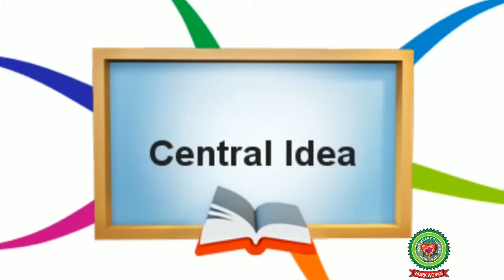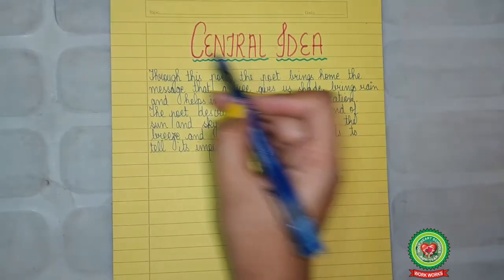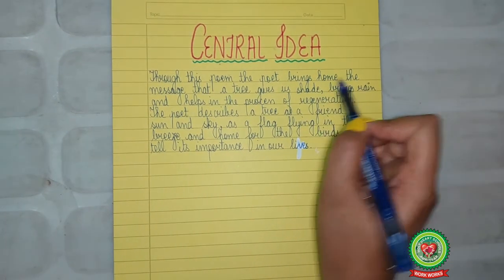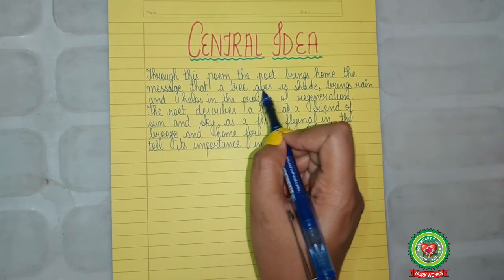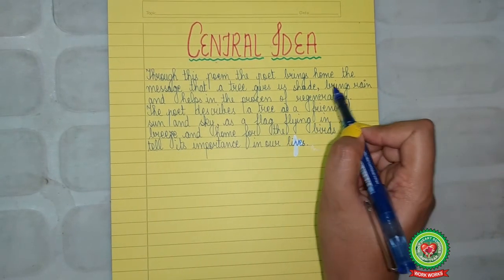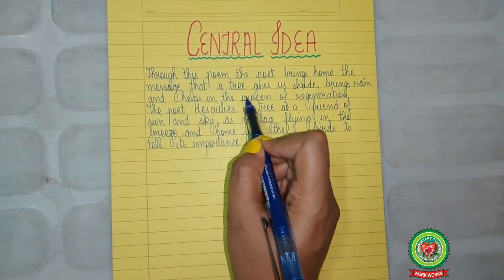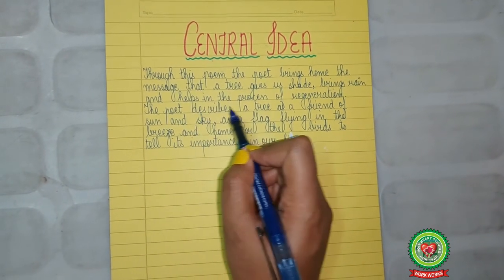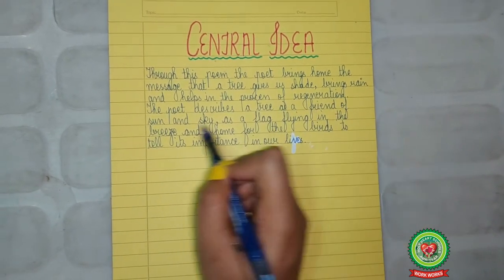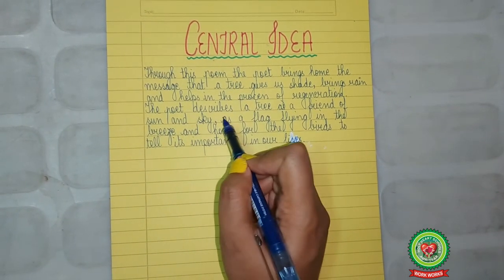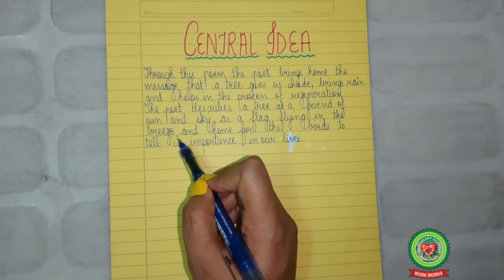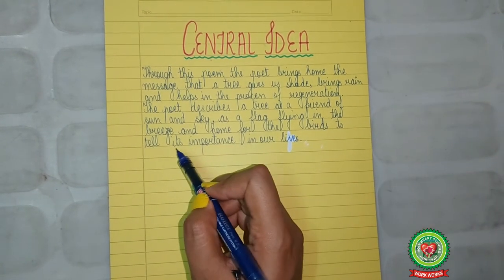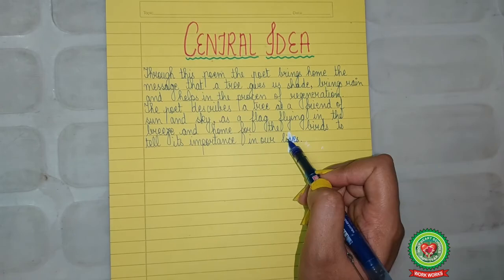Now let us start with the central idea. Through this poem, the poet brings home the message that a tree gives us shade, brings rain, and helps in the process of regeneration. The poet describes a tree as a friend of sun and sky, as a flag flying in the breeze, and a home for the birds, to tell its importance in our lives.